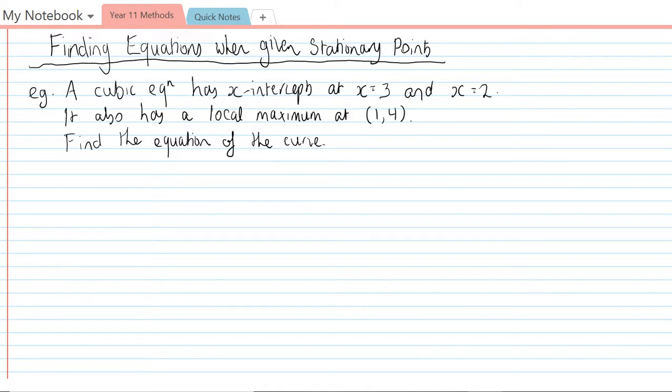To be able to do a question like this first we need to know the general form. For a cubic equation that form is y = ax³ + bx² + cx + d. This can be extended out to any polynomial of any order, so we just keep on adding more letters each time. Here we have a general form and we have some information in the question.